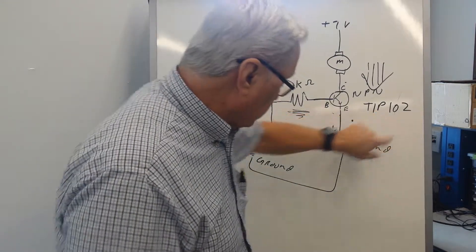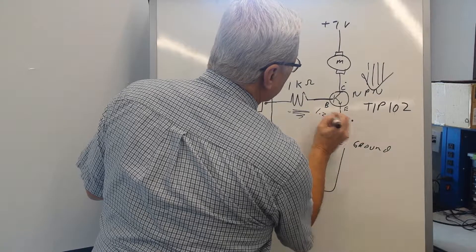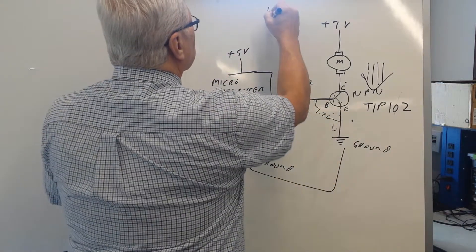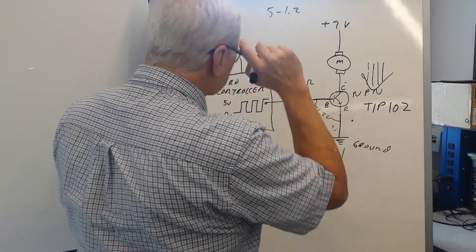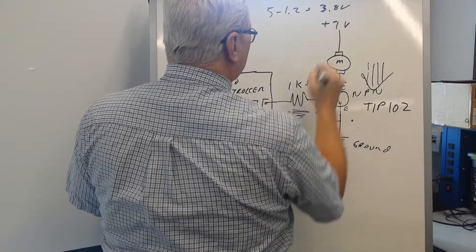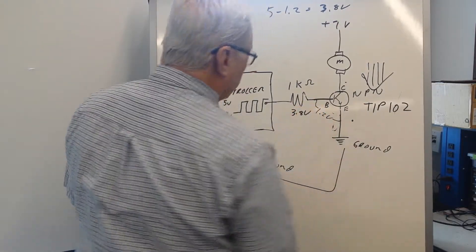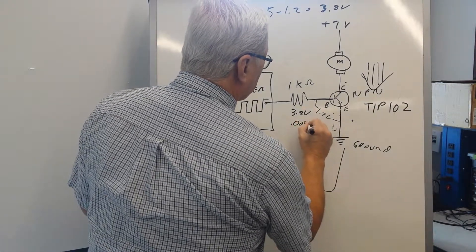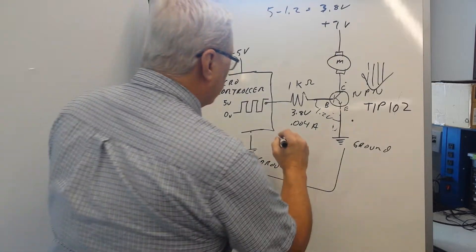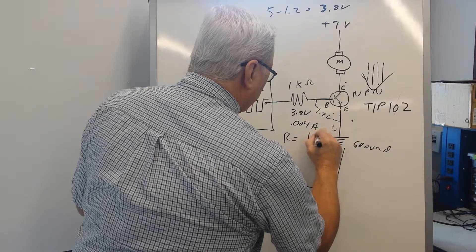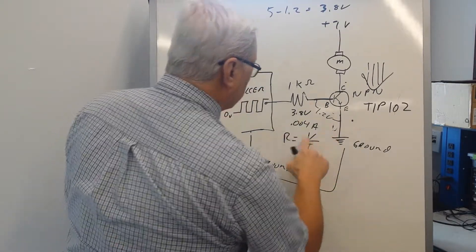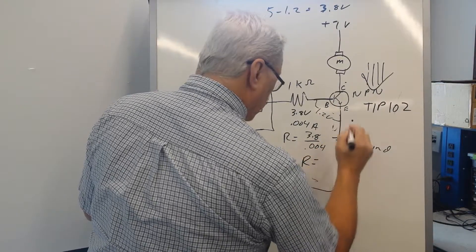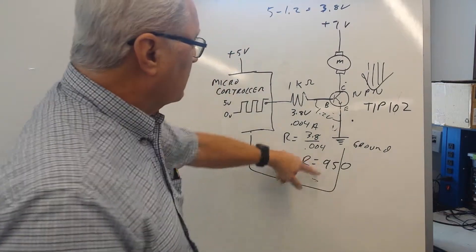So, in this case, for the TIP 102, we have about 1.2 volts from the base to the emitter. This is 5 volts from my microcontroller, so 5 minus 1.2 gives us 3.8 volts. And I know that the current to saturate this is about 4 milliamps, or 0.004 amps. And I can apply Ohm's law, rearranging slightly the resistance equals the voltage over the current. And if I put voltage as 3.8, my current is 0.004, I get R equal to 950, and close enough to 1k.